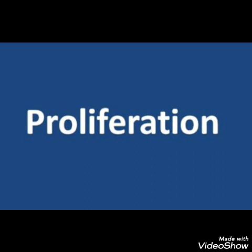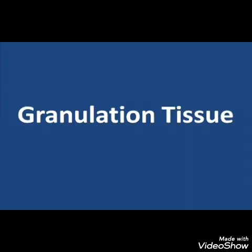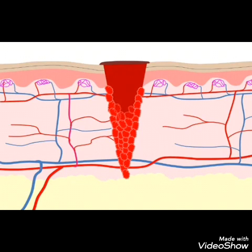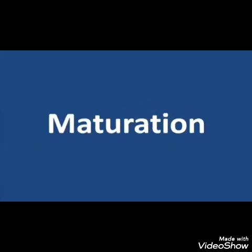The third phase is proliferation. In this phase, granulation tissue will form in the wound cavity. The wound cavity will be filled by the granulation tissue. Fibroblasts will come and produce and release collagen fibers, and these collagen fibers will give strength to the granulation tissue.